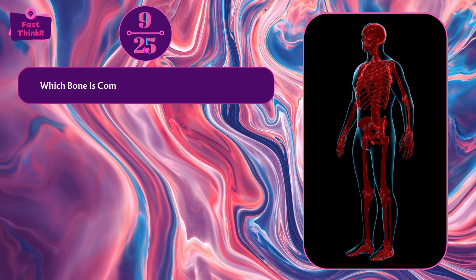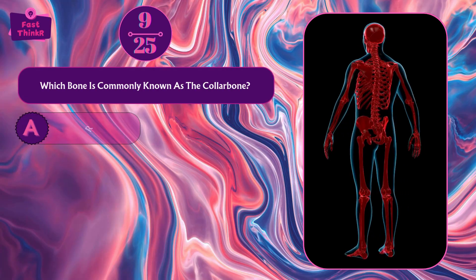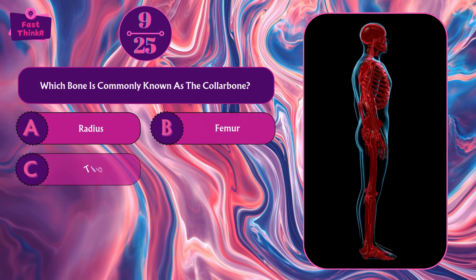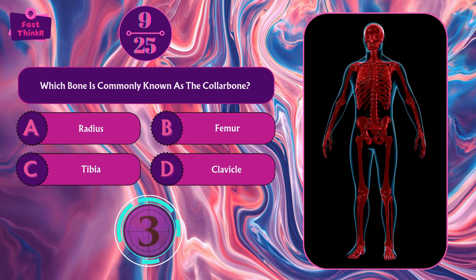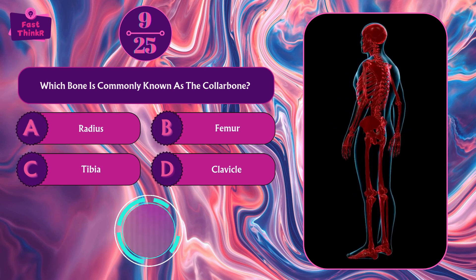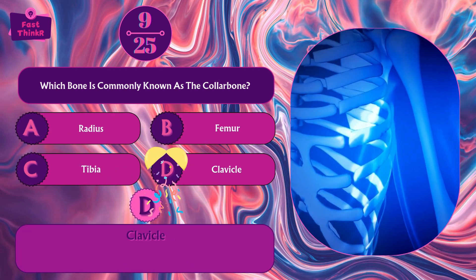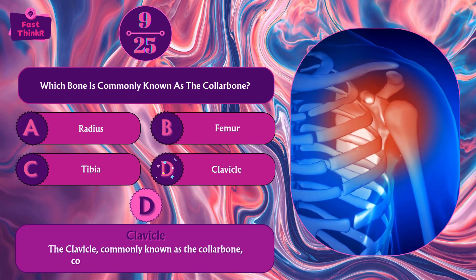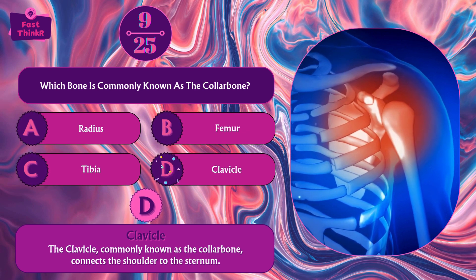Which bone is commonly known as the collarbone? Radius, femur, tibia, or clavicle? Option D — clavicle. The clavicle, commonly known as the collarbone, connects the shoulder to the sternum.